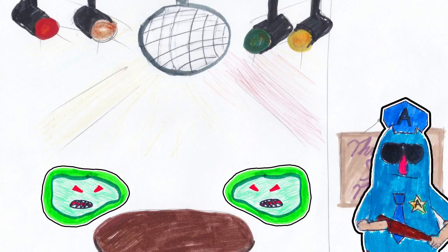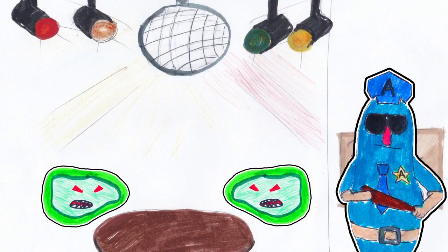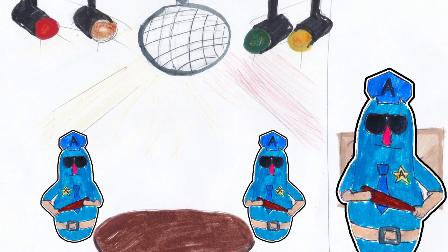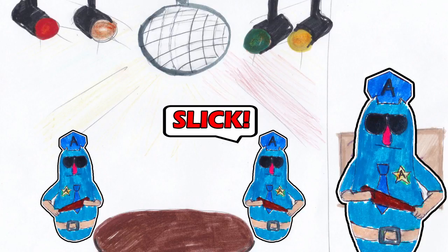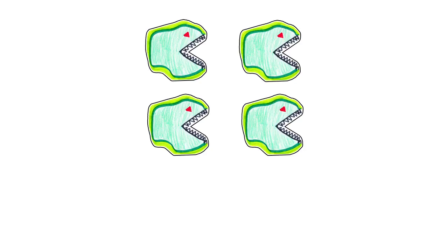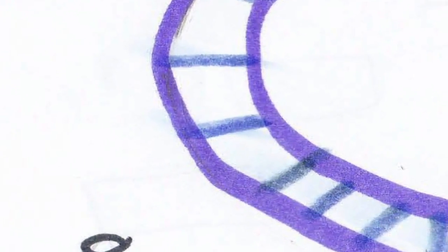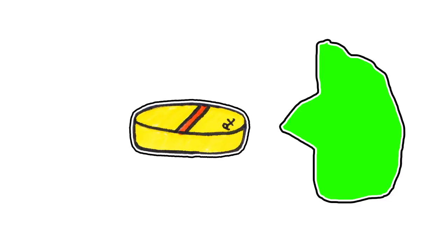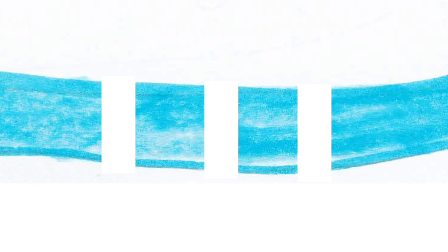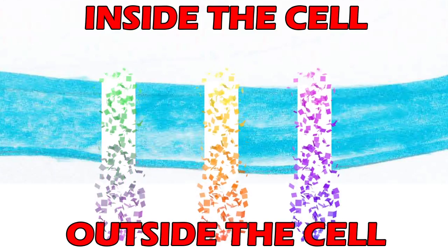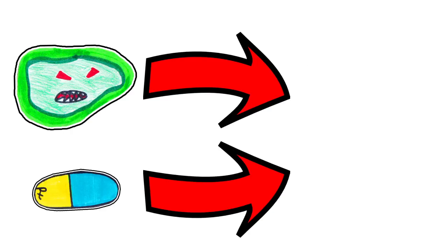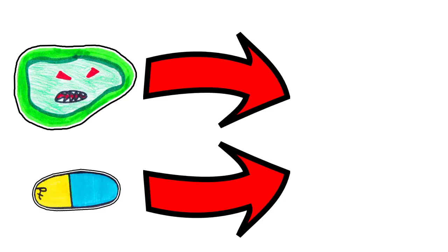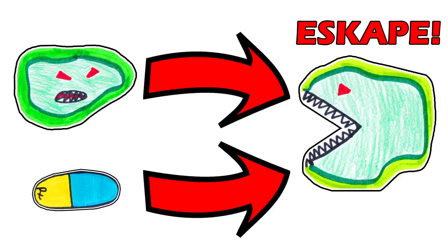ESCAPE organisms are bacteria that gain resistance to multiple modern antibiotics. But how can bacteria become so powerful? Since bacteria divide every 20 minutes, there are high chances for random mutations to happen in their genetic code. Some of these mutations can result in an altered binding site, preventing antibiotic molecules from binding to the target protein. Other mutations can increase the efficiency of efflux pumps to remove antibiotics at a higher rate. These mutations result in antibiotic resistance, and with increased exposure to antibiotics in modern hospitals, we end up with superbugs like ESCAPE, which are extremely difficult to kill.